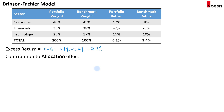We'll start by calculating the contribution to the allocation effect for each sector. The formula for the allocation effect is: (portfolio weight minus benchmark weight) multiplied by (the benchmark return for sector i minus the overall benchmark return).